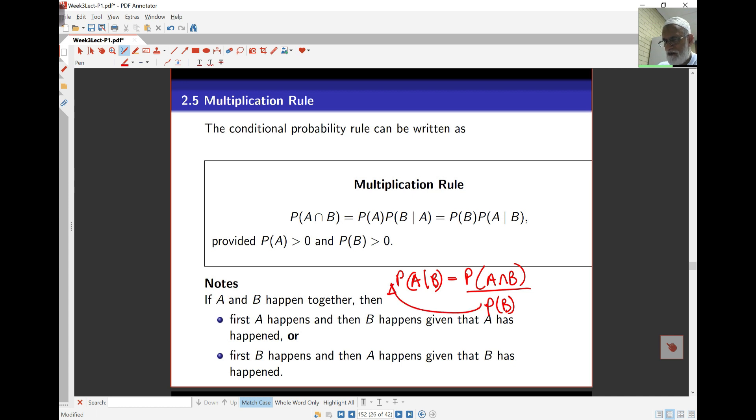That's this part here. I'm actually working it out, so probability of A intersect B is probability of A times probability of B given A, or probability of B times probability of A given B. The way this works is, if I want A and B to happen together, I can condition this this way. First A happens, and then B happens given A has happened, or first B happens, and then A happens given B has happened. So this is the multiplication rule, and this is really a very useful rule.